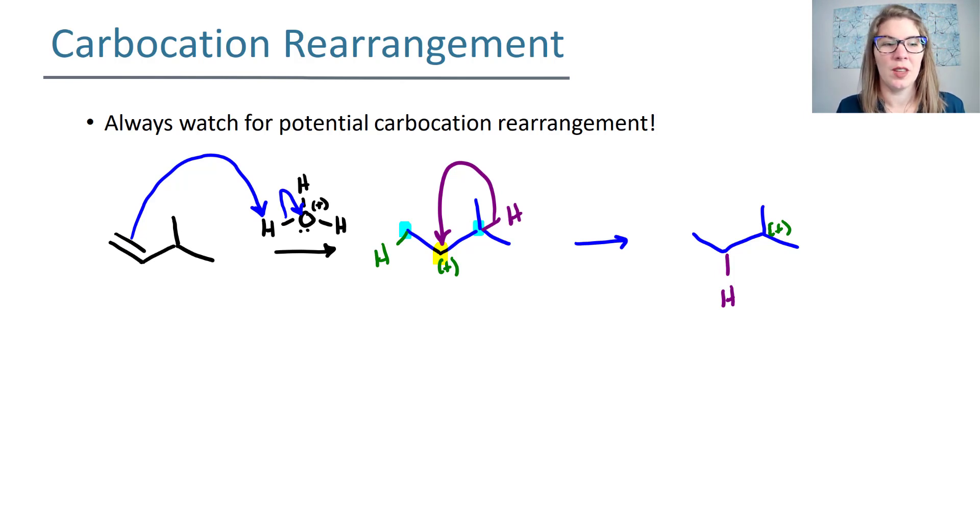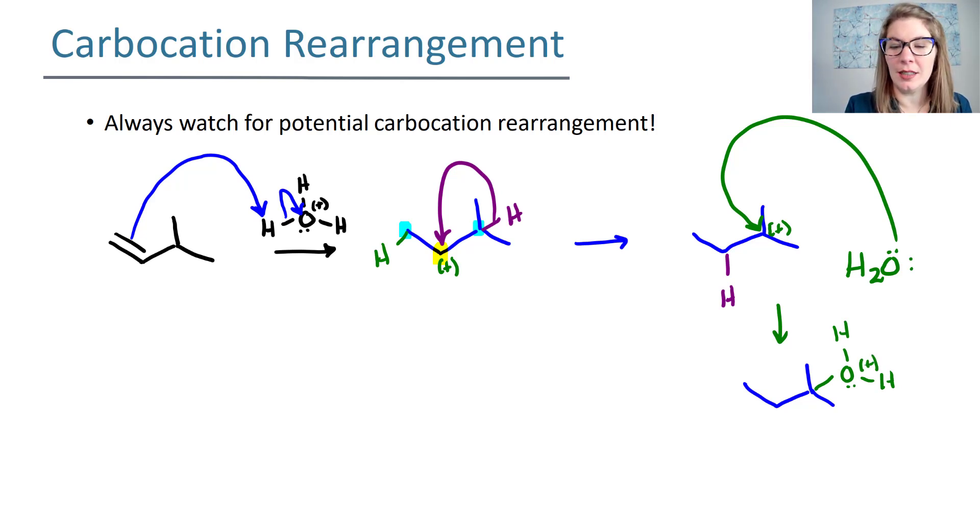At this time, my nucleophile, which is water, can add. And you end up getting your OH at that more substituted side. And remember, it's still protonated. And now a new water molecule needs to come in and pull off that proton so that you just have an alcohol at the end and not a protonated alcohol because we need to illustrate the recreation of our acid catalyst. So now we have an OH here and we recreated H3O+.